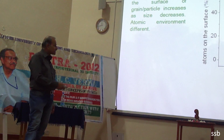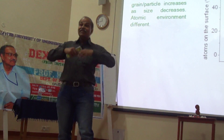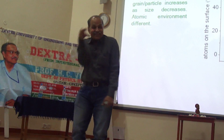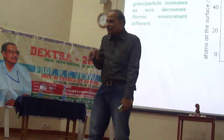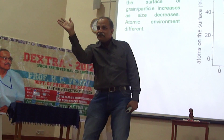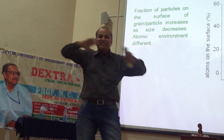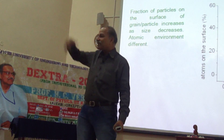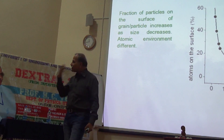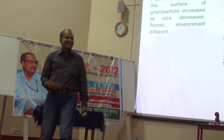Things which are inside the interior cannot do much. But things on the surface — like living right at the fence where the garden is on one side and you are on the other — are much more active. They can do much more chemical activity. So that is why the whole behavior of the material is very different when it comes to nano sizes.